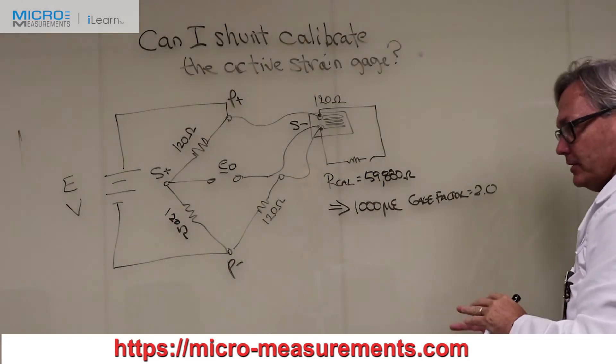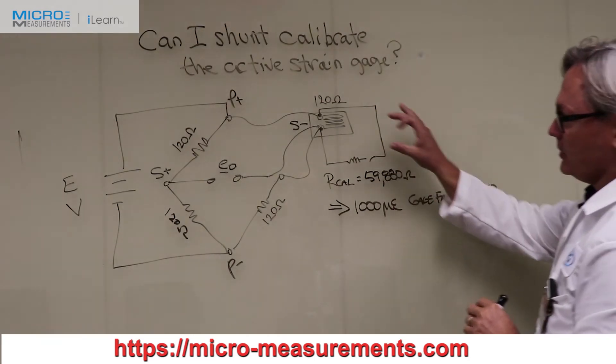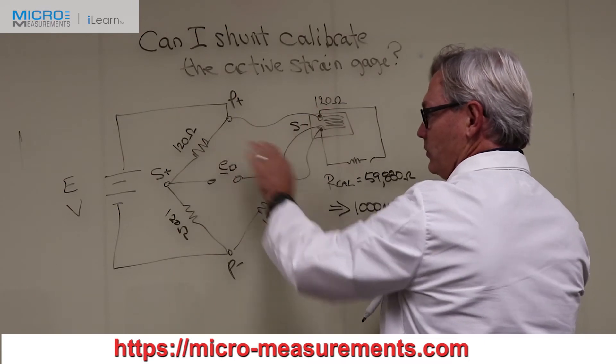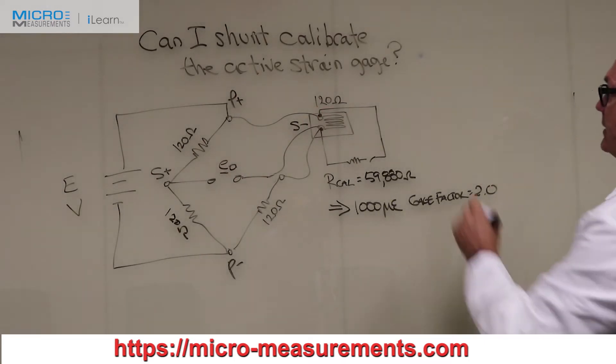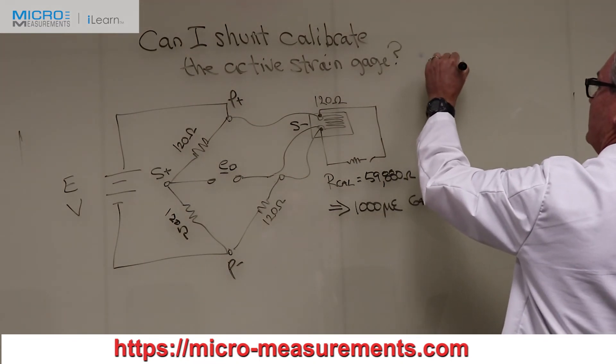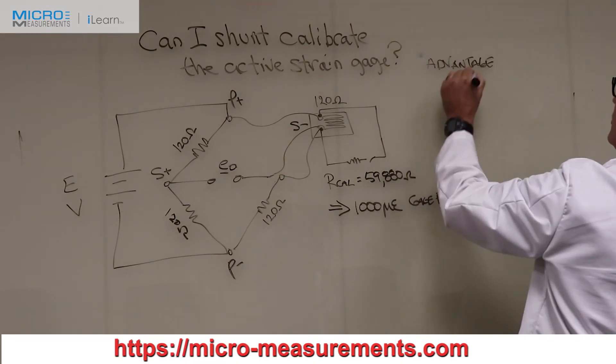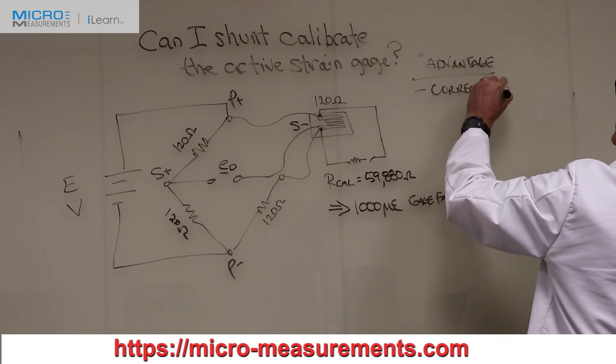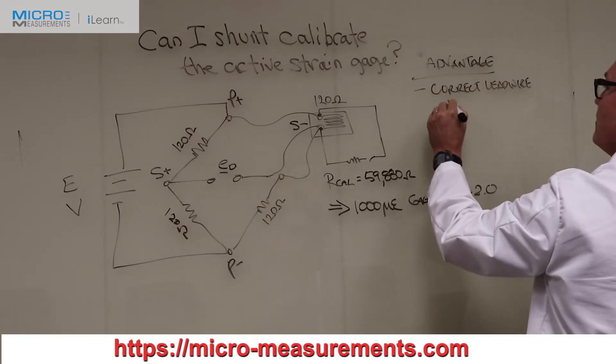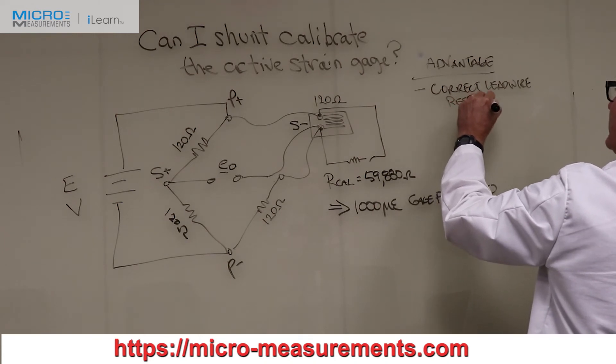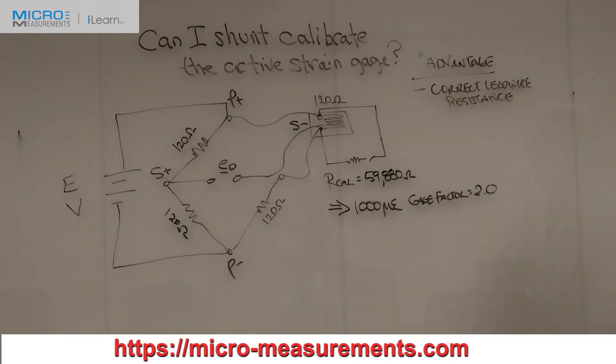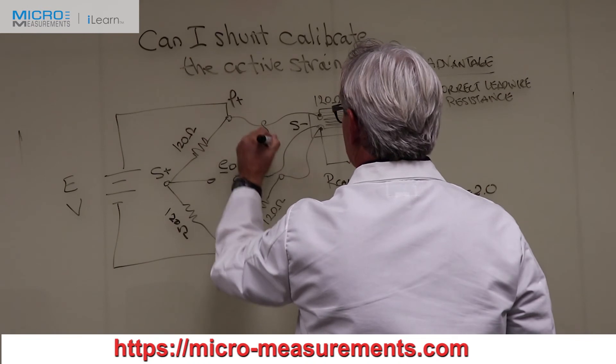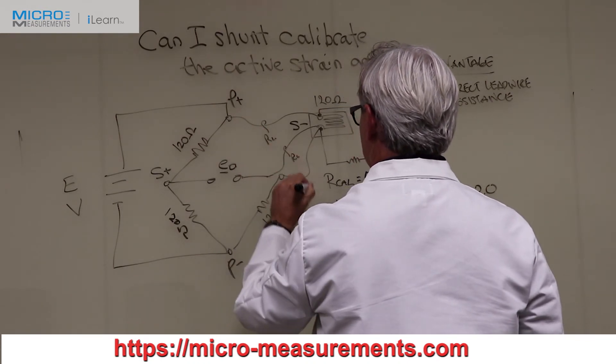So let's talk about advantages and disadvantages. One of the big advantages to shunt calibrating the active gauge is that you're on this side of the lead wire resistance that connects the gauge into your instrumentation. And what that means is that an advantage would be that you can correct for lead wire resistance. That's probably the main reason why you would shunt calibrate at the active strain gauge, is that you can correct for whatever the influence is of these wires. And I'll just label them as R sub L.